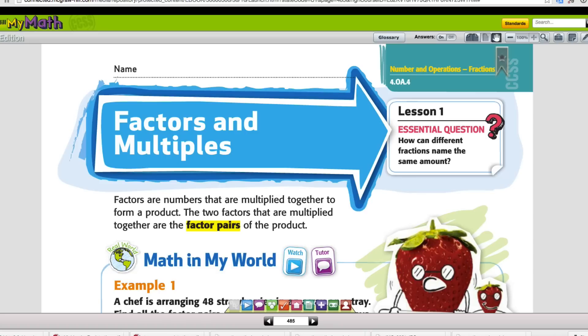Let's go ahead and look at the directions here on Lesson 1. It says factors are numbers that are multiplied together that form a product. The two factors that are multiplied together are the factor pairs of the product.